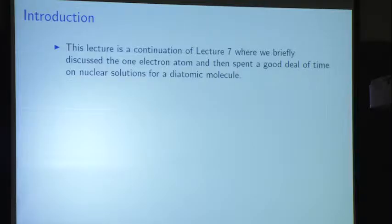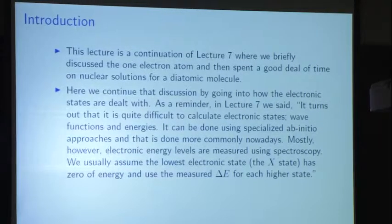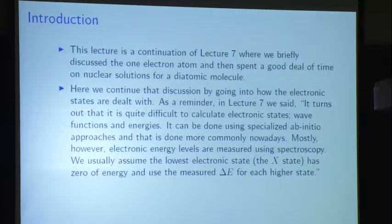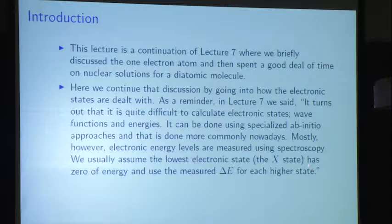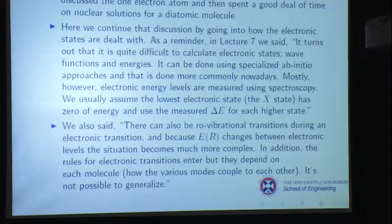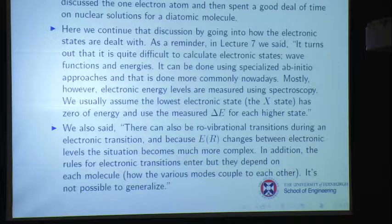This is a continuation of the last lecture. I want to remind you of two things. It's difficult to calculate the electronic states, and we typically rely upon measurements. We assume that the lowest state, the X state, has zero energy, and we just go up from there based on the delta E's that we measure spectroscopically. We also said that there can be rovibrational transitions during an electronic transition, and the potential field used in the nuclear solution, ER, is going to change between those two states.